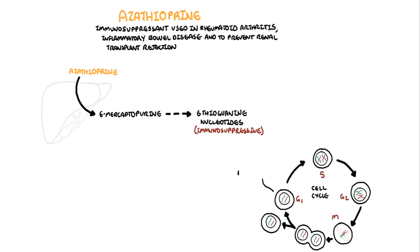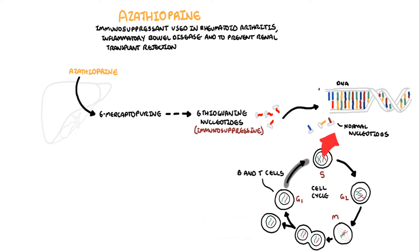T and B cells enter the cell cycle to proliferate. During the DNA synthesis phase, or the S phase of the cell cycle, 6-thioguanine nucleotides incorporates into DNA as a false purine base. An additional cytotoxic effect is related to its incorporation into RNA.